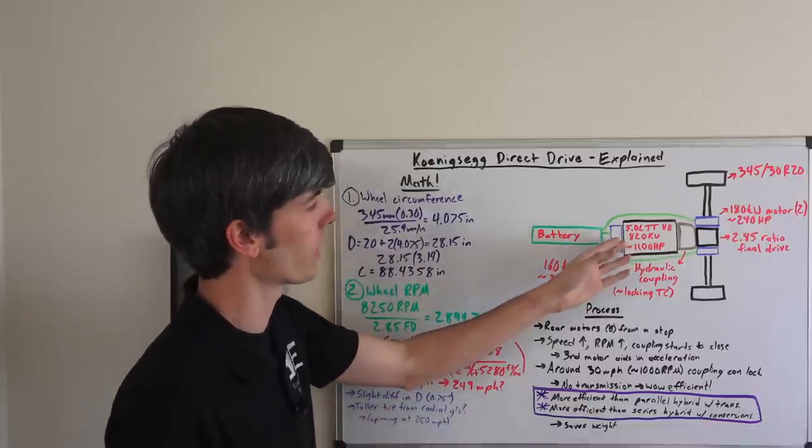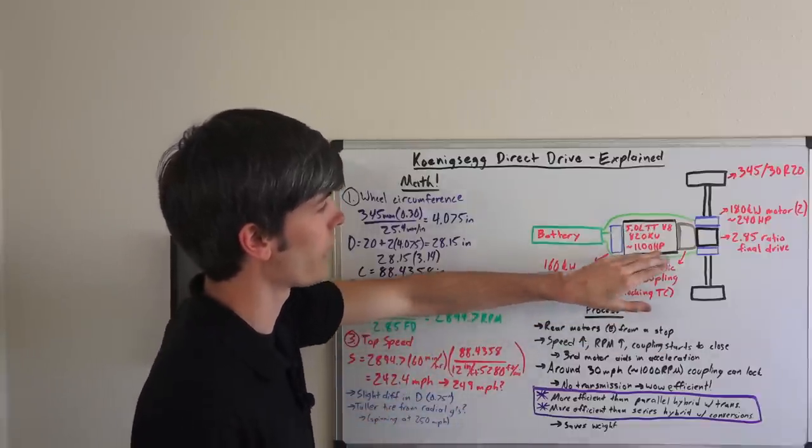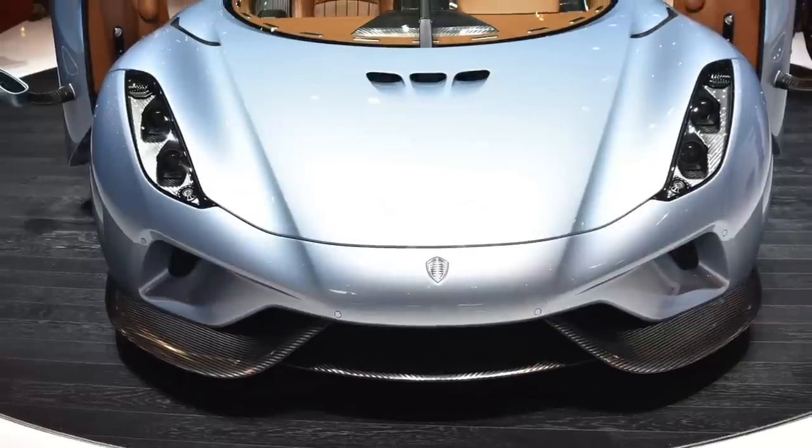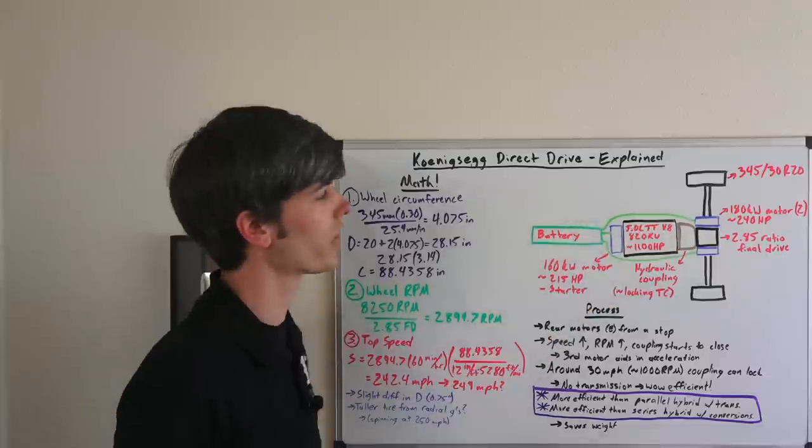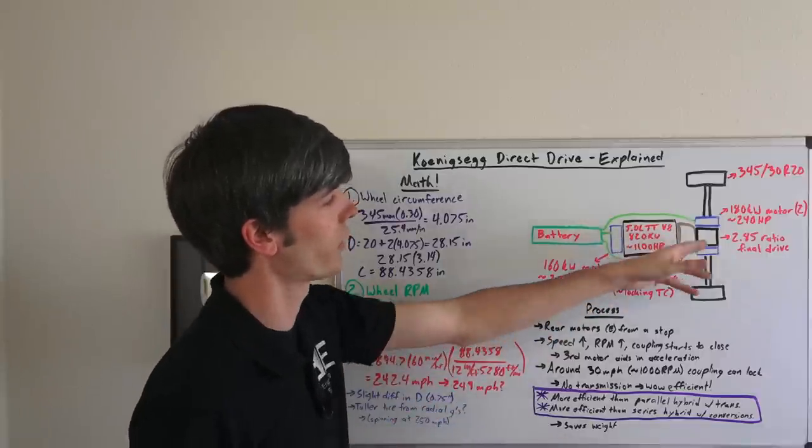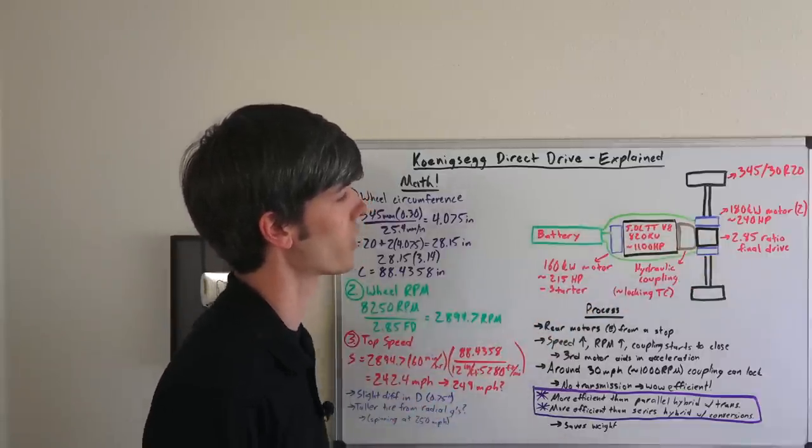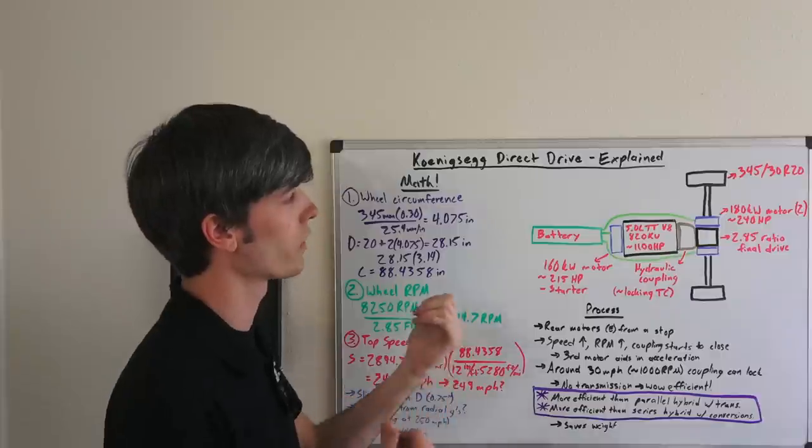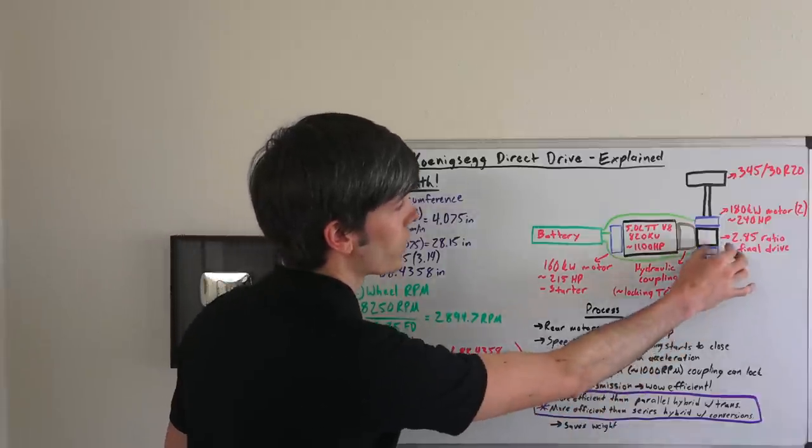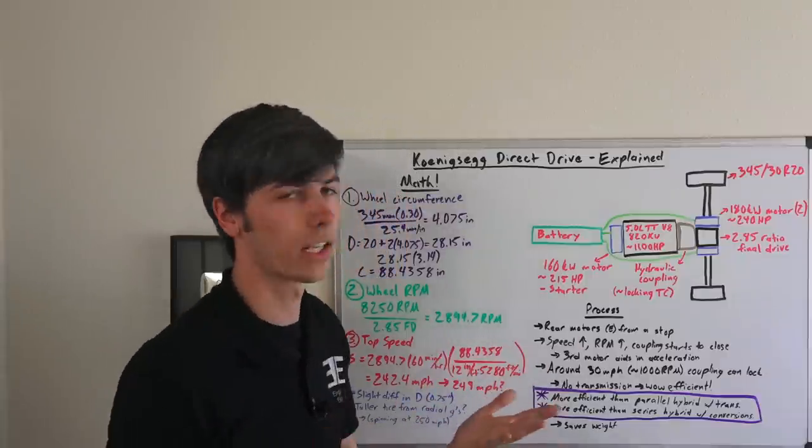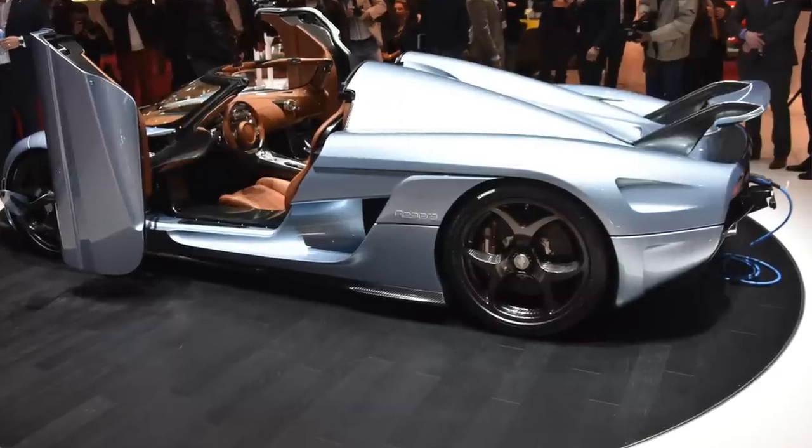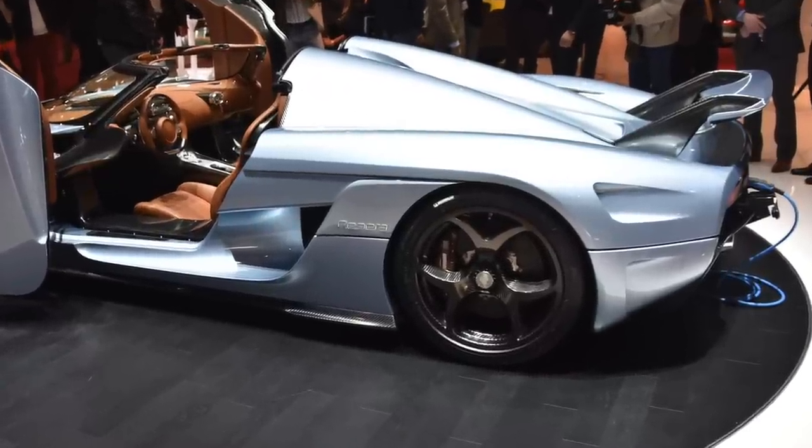So that's hooked up to the crankshaft with this engine and then the engine sends its power through a hydraulic coupling. Sounds very similar to a locking torque converter as it does have the ability to lock up. Power is then sent to the rear differential which has a final drive ratio of 2.85 to 1 and then towards the outer wheel. Now on each axle you do have an additional electric motor each producing 180 kilowatts or about 240 horsepower sending power to the rear wheels.